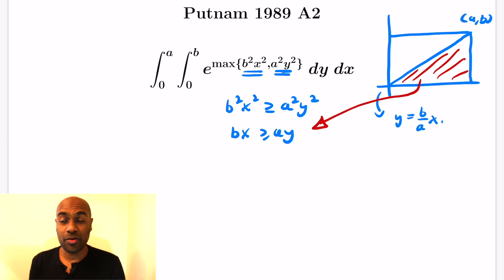So the region where bx is greater than or equal to ay is actually this red region right over here. Now the region where the other inequality holds is actually this purple region here, and so we can focus just on the integral over the red region. By the symmetry of the function over the square, the integral is the integral over that triangle T of e to the b squared x squared, dy or dA where A is the region of integration being that triangle.